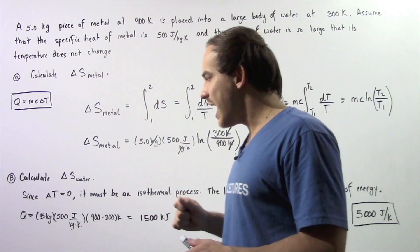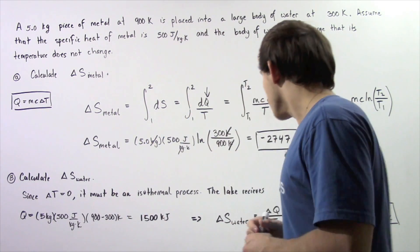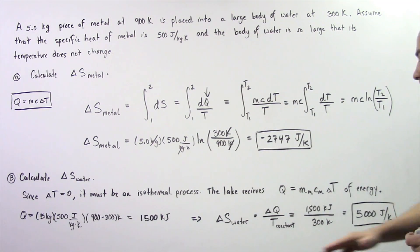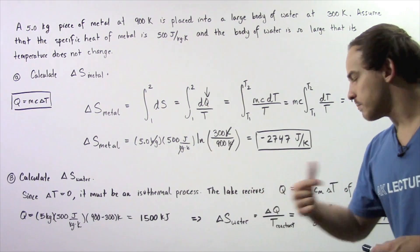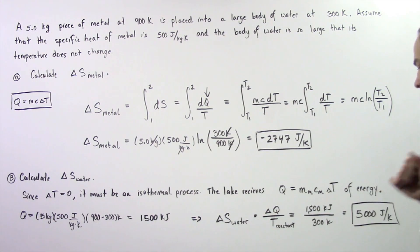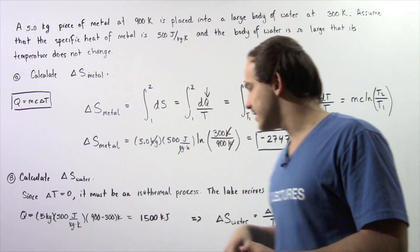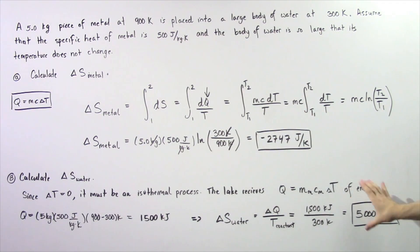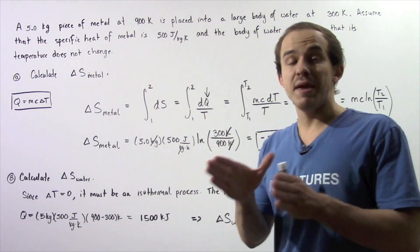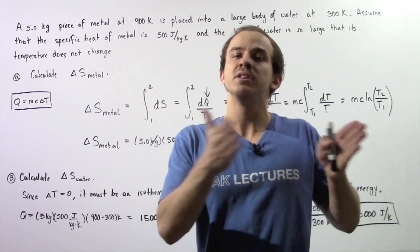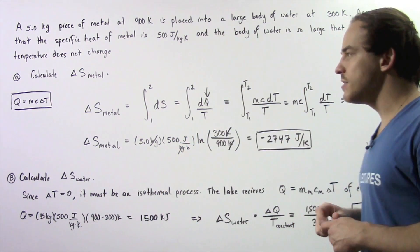Because the temperature is assumed to be constant, we calculate the change in entropy using the simplified formula: the change in entropy of the water equals the change in energy divided by the temperature. So 1500 kilojoules divided by 300 Kelvins gives us 5 kilojoules per Kelvin, or equivalently 5000 joules per Kelvin. The entropy of the surroundings increases by this amount. Taking the sum of both values gives a positive total, consistent with the second law of thermodynamics, which states the total entropy of system plus surroundings always increases.